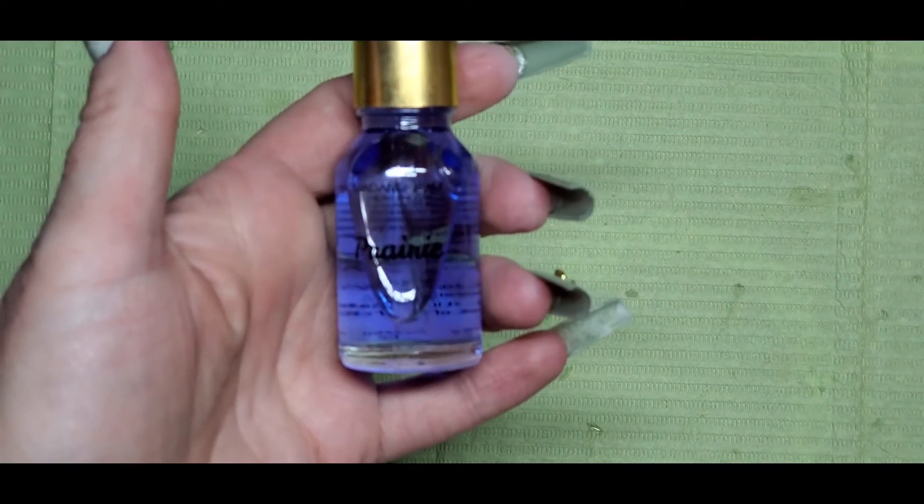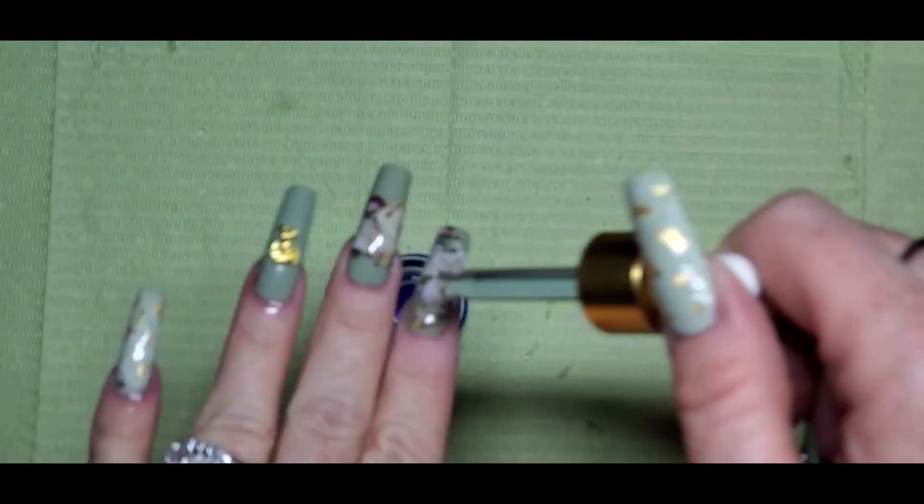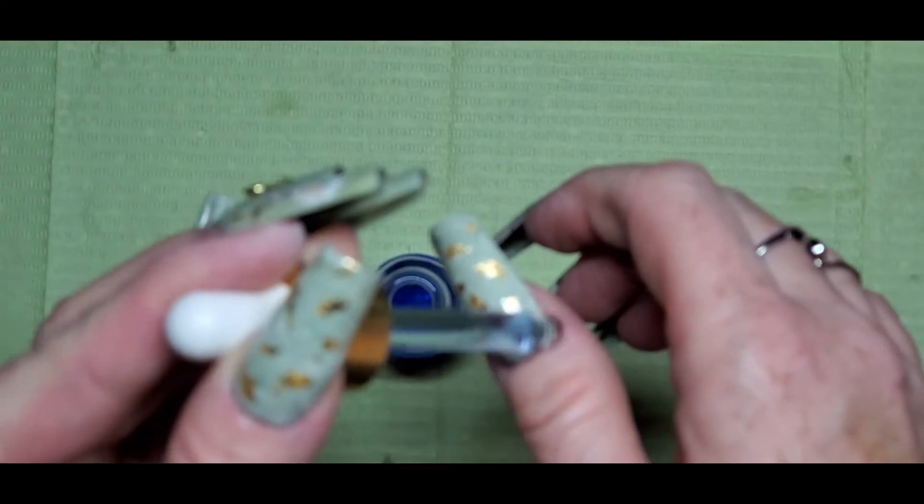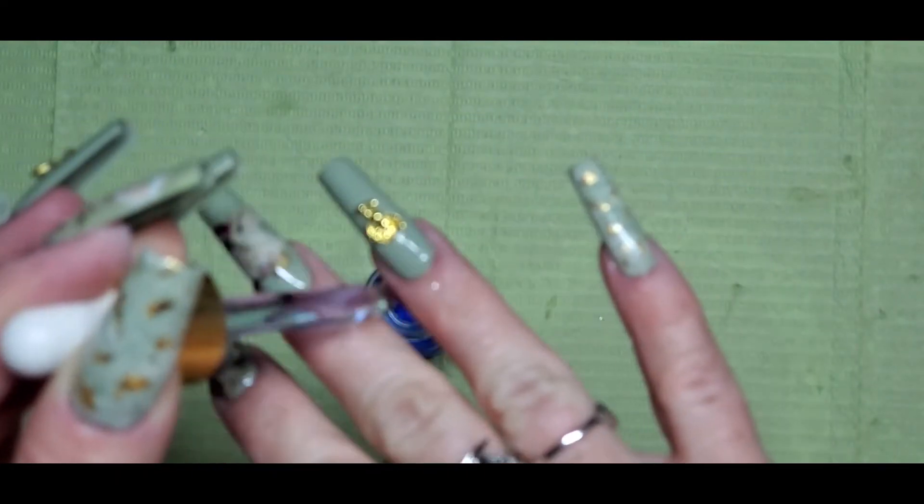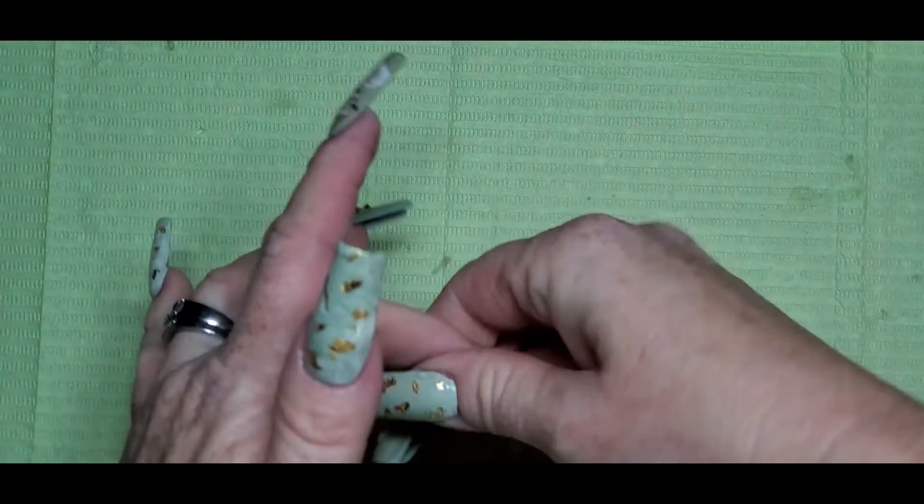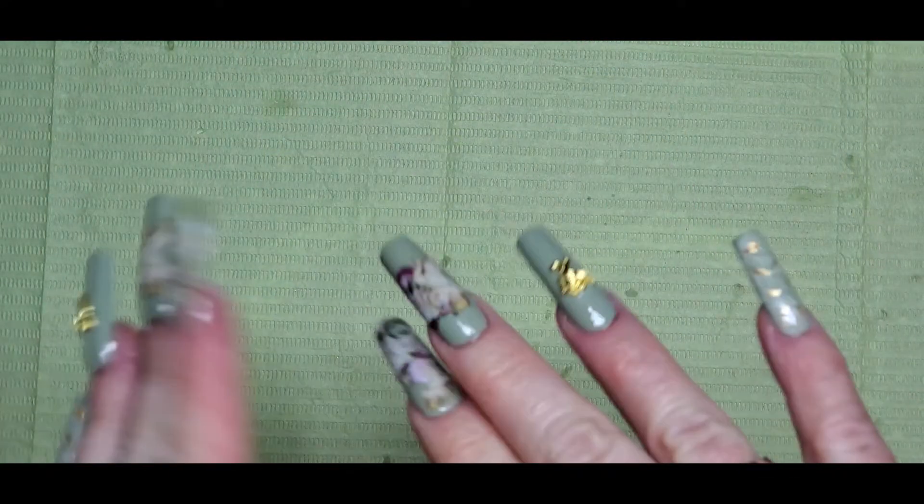Now I'm going in with the Madame Glam cuticle oil. This is Prairie, the lavender scent. Oh, this stuff is great. This is my new favorite cuticle oil. The smell is perfect and it's a really good oil.